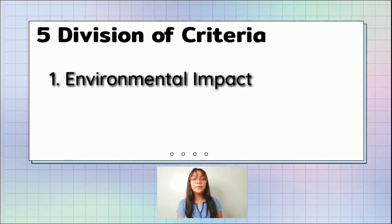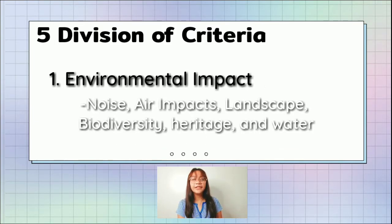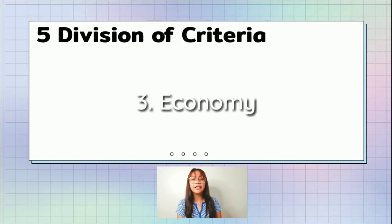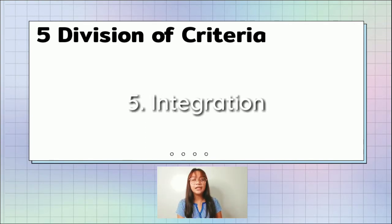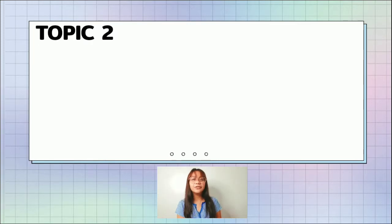Number one is environmental impact, which includes noise, air impact, landscape, biodiversity, heritage, and water. Number two is safety. Number three is economy. Number four is accessibility pedestrian. And number five is integration. Let's proceed to the next topic, which is basic elements of highway traffic analysis.